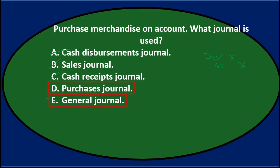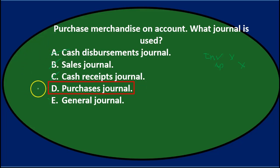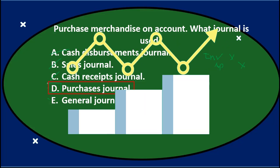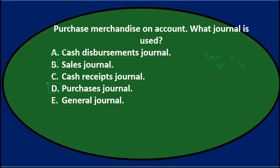We're left with D and E — purchases journal and the general journal. Purchase merchandise on account: it fits into the purchases journal because inventory is going up with a debit and we credit accounts payable. So we don't need the general journal. Final answer: Purchase merchandise on account — what journal is used? D. Purchases journal.